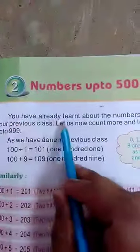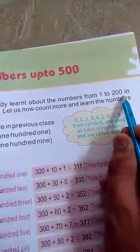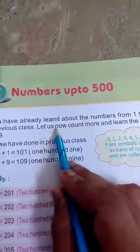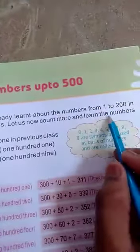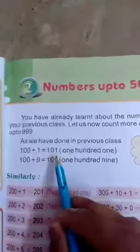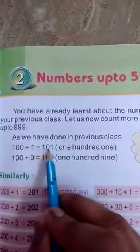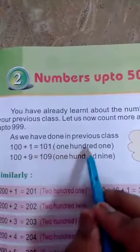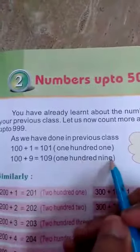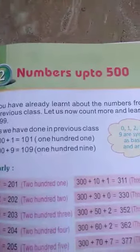You have already learned about the numbers from 1 to 200 in your previous class. Let us count more and learn the numbers up to 999. As we have done in the previous class, 100 plus 1 is equal to 101, and 100 plus 9 is equal to 109. In the same manner, all the 3-digit numbers can be written. So come to the exercise.